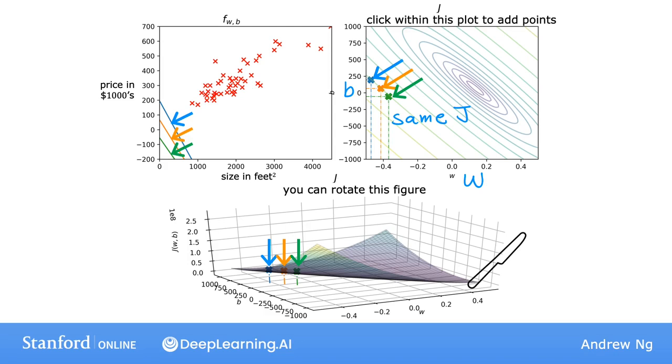And in the figure on the upper left, you see also that these 3 points correspond to different functions f, all 3 of which are actually pretty bad for predicting housing prices in this case.